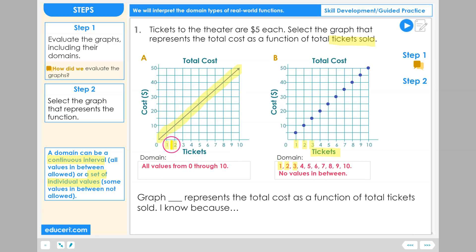Graph A allows parts of tickets to be sold so this cannot be our function graph. The function graph is B.